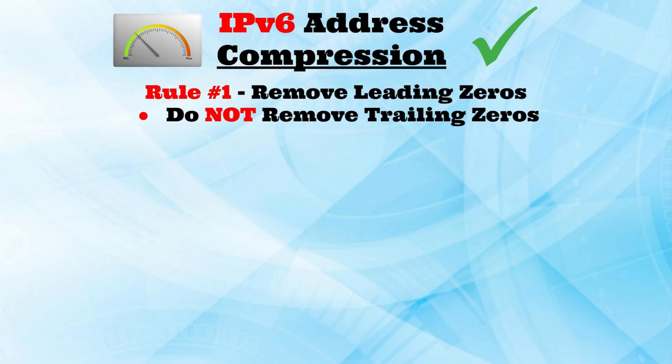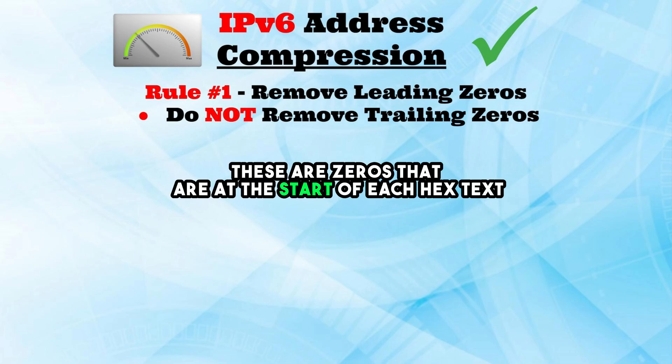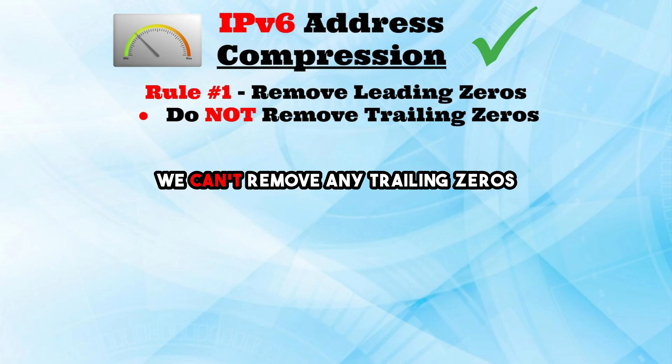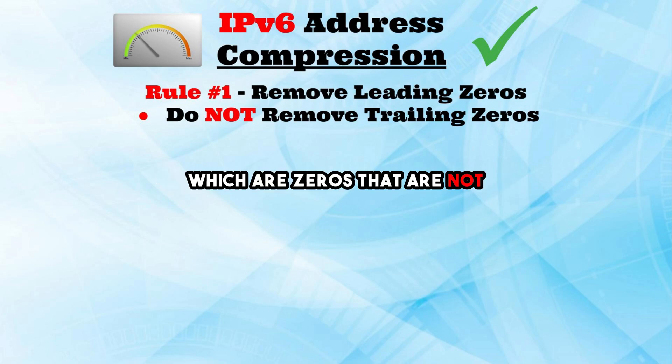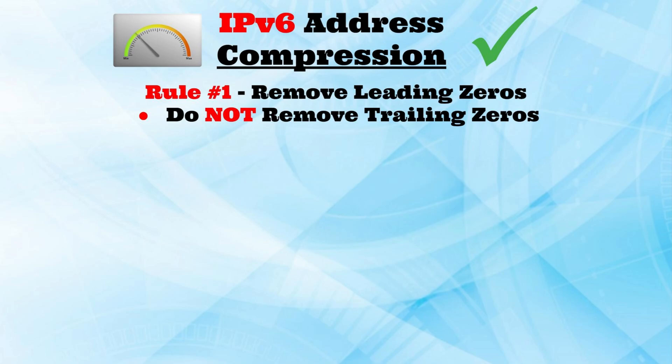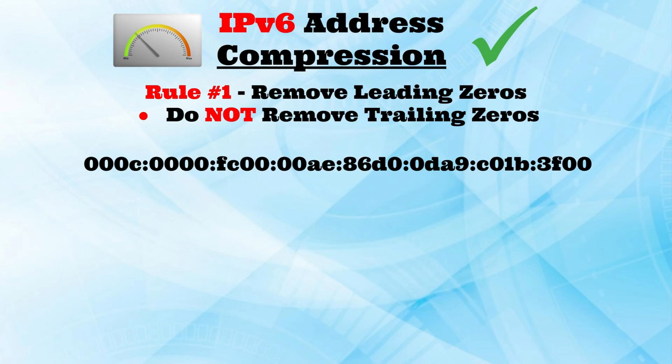First, we can remove any leading zeros. These are zeros that are at the start of each hex tet. We can't remove any trailing zeros, which are zeros that are not at the beginning of the hex tet. Let's apply this rule to this address.